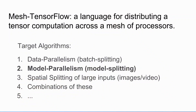Things we'd like to be able to implement are data parallelism, which is what everybody does already and you don't need Mesh TensorFlow for, but more excitingly, we want to do model parallelism — splitting the network itself across processors — but we might also want to split an image across processors. We might want to combine all these things.